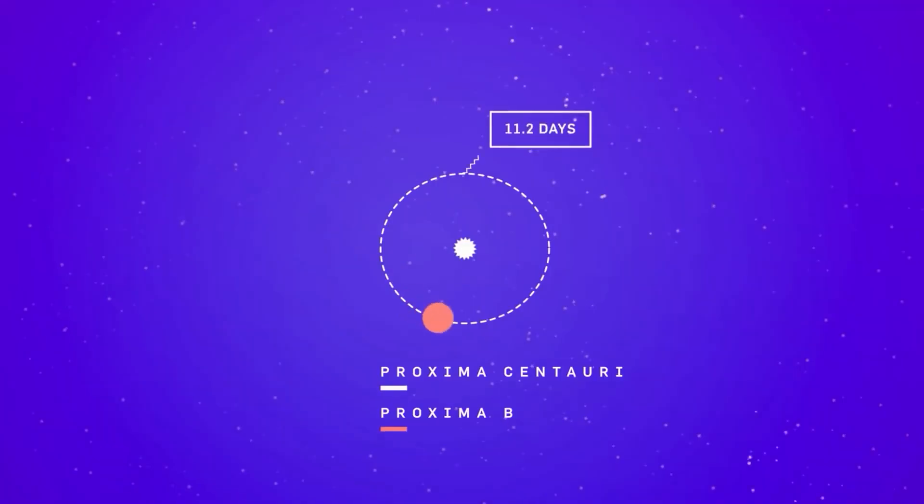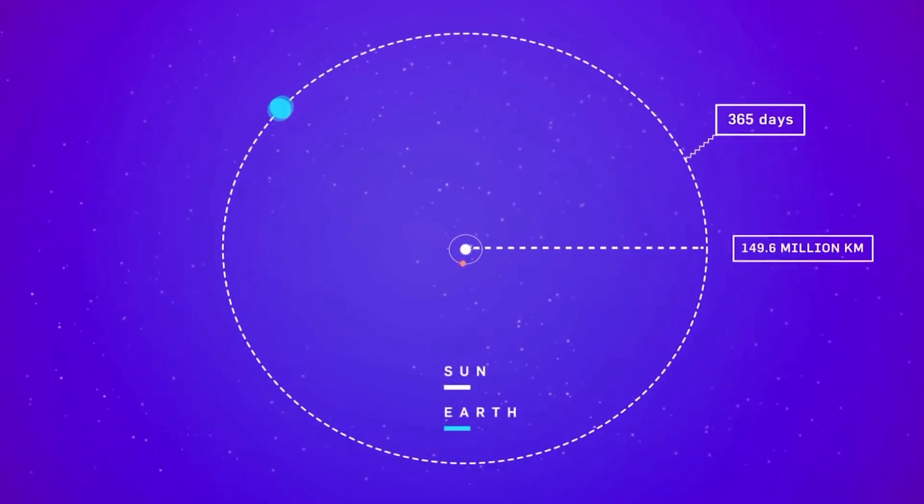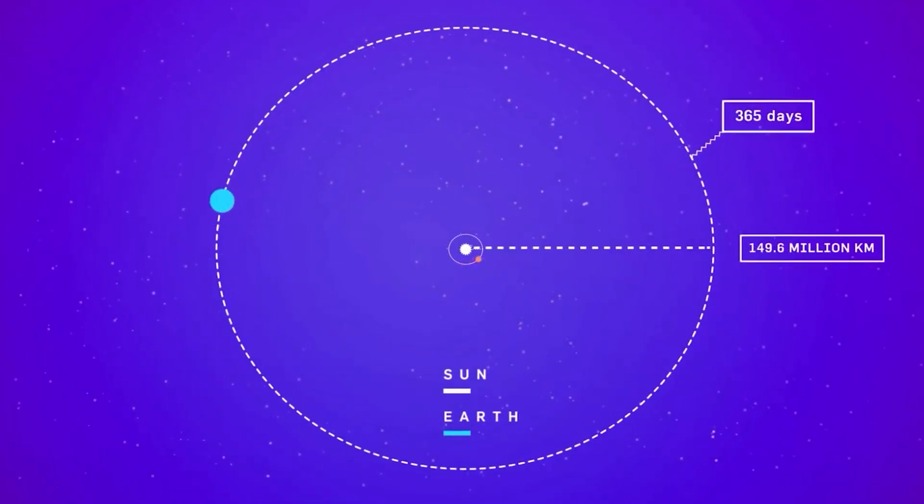It circles Proxima Centauri every 11.2 days, at a distance of 7 million kilometers, only 5% of the distance that Earth orbits the Sun.